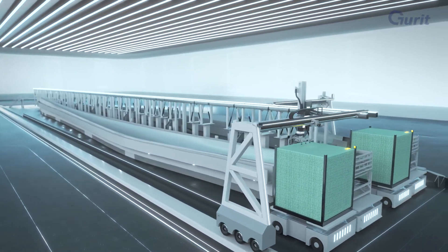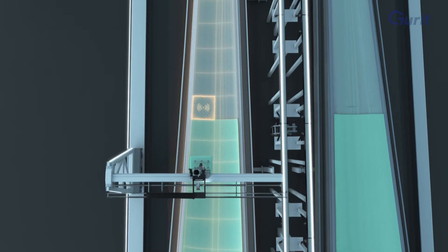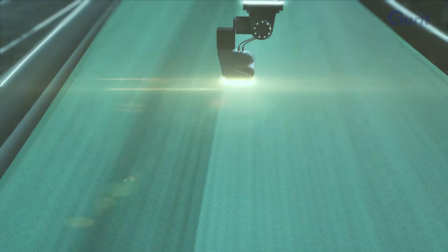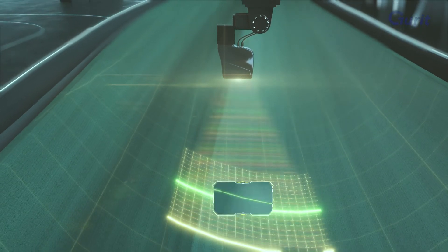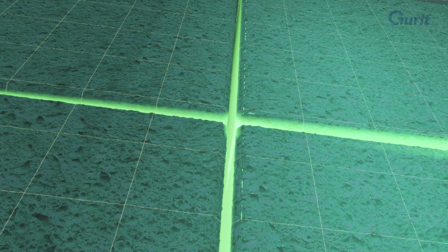Automated grippers allow the use of larger core panels, further increasing efficiency. The layup of the core material is fast, precise and documented with state-of-the-art video technology for automated visual inspection and error detection.